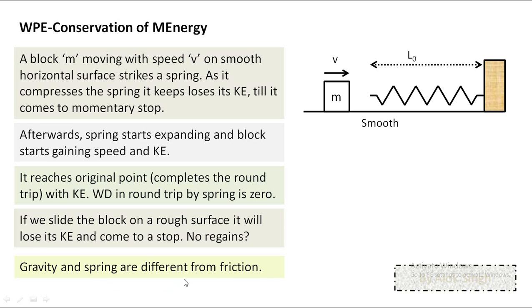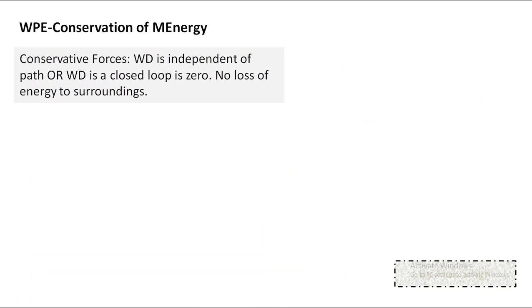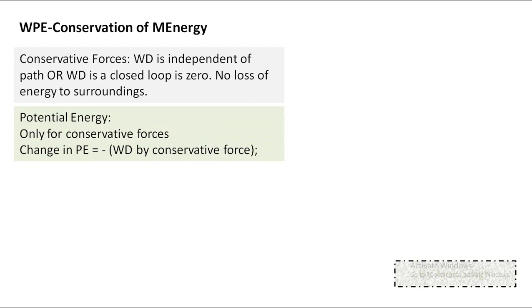In the first two cases energy was stored in another form, but with friction energy was lost. These two kinds of forces are given different names: gravity and spring are called conservative forces, and friction is a non-conservative force. Conservative force: work done is independent of path, or work done in a closed loop equals zero. When an object moves under conservative forces only, there is no loss of energy to the surroundings — energy is retained in the object. Potential energy is defined only for conservative forces.